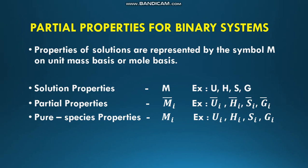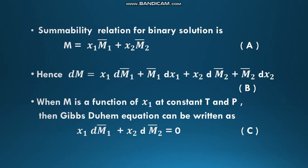Today the topic is partial properties for binary systems. Solution properties are represented by the symbol M on a unit mass or mole basis — examples are U, H, S, and G. Partial properties are represented by the symbol M-i-bar, with examples U-i-bar, H-i-bar, S-i-bar, and Z-i-bar. Pure species properties are represented by the symbol M-i, with examples U-i, H-i, S-i, and Z-i.